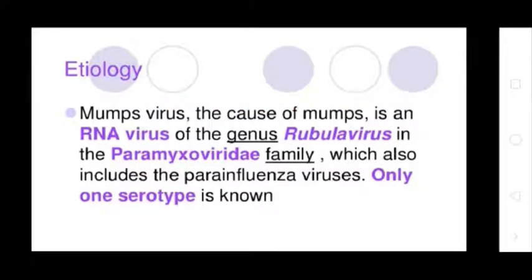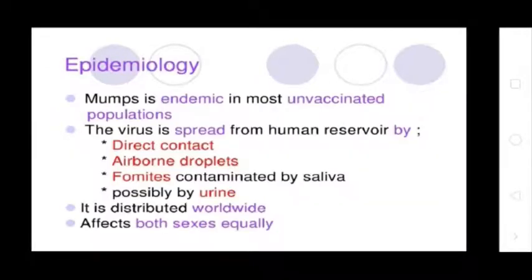Etiology of Mumps: The cause of mumps is an RNA virus of the genus Rubulavirus in the Paramyxoviridae family, which also includes the parainfluenza virus. Only one serotype is known.